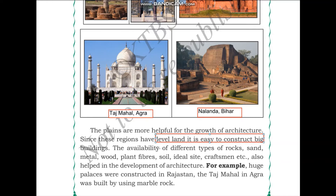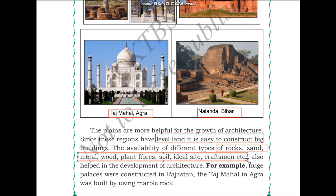The plains are more helpful for the growth of architecture since these regions have level land, making it easy to construct big buildings. The availability of different types of rocks, sand, metal, wood, plant fiber, soil, ideal sites, and craftsmen also helped in the development of architecture. You need land to support the architecture, materials like rock and sand, and craftsmen - all of which are present in the northern plains.